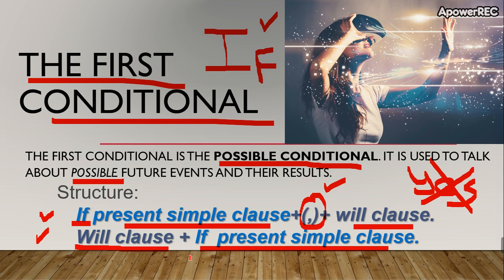So, we are going to write sentences and look at the uses we can apply for this first conditional. Remember, this is a possible conditional. This is for conditions, but this is possible. We talk about possible future events and possible results.